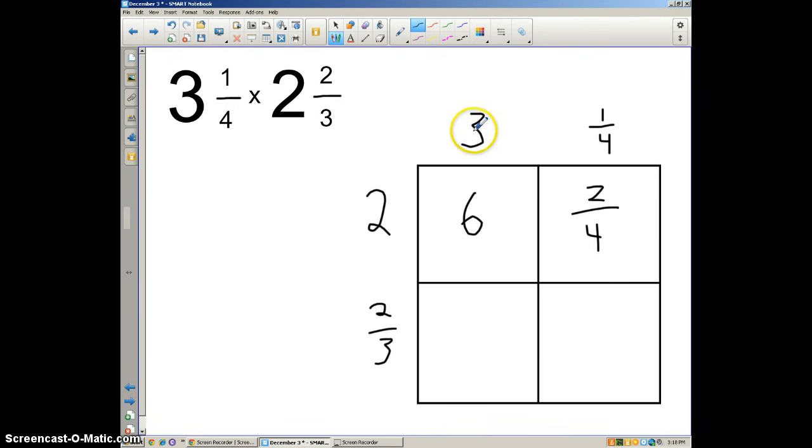And we're going to multiply this whole number, the 3 times the 2/3. So same thing, 3 is the same thing as 3/1. If that helps me to visualize that better, I can do that. So 3 times 2 is going to be 6. 1 times 3 is going to be 3. And I go, wait a minute, 6/3. And I know that fraction is another way to look at it, is division. 6 divided by 3 is going to give me 2.